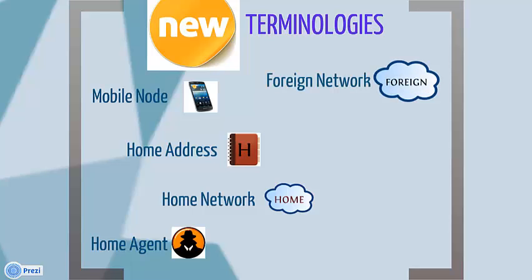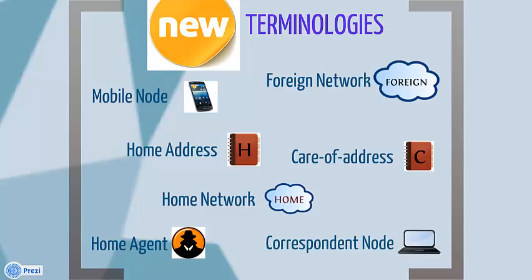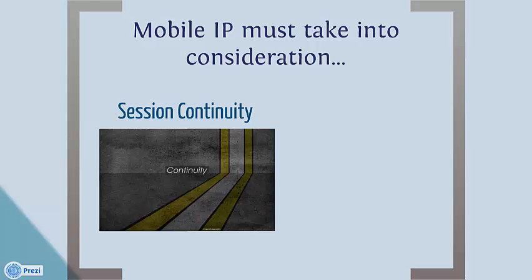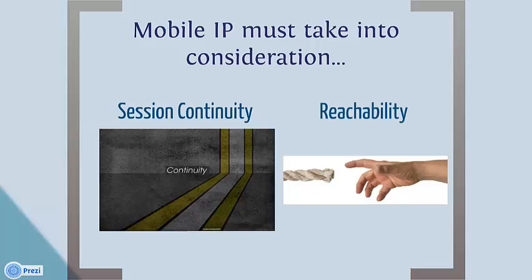The foreign network is the new network that the mobile node visits. The corresponding node is any node that tries to send messages to the mobile device when it is outside its home network. It is important to note that mobile IP must take into consideration two important things: session continuity, meaning that communication must flow without interruption even while the mobile node is moving from its home network to the foreign network; and reachability, meaning that communication must be possible wherever the mobile node is located, either in its home network or in the foreign network.